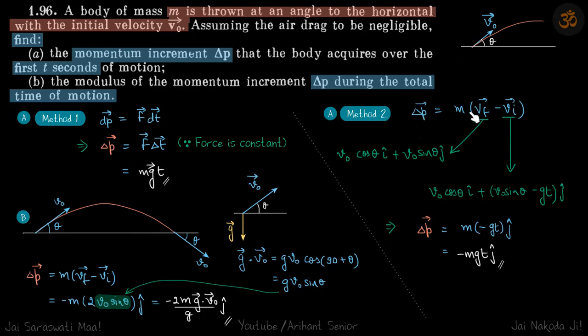Second method: m into vf minus vi. So if it is launched with a velocity v0 vector, so initial velocity will be v0 cos theta i cap plus v0 sin theta j cap.